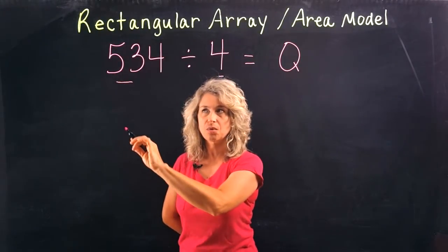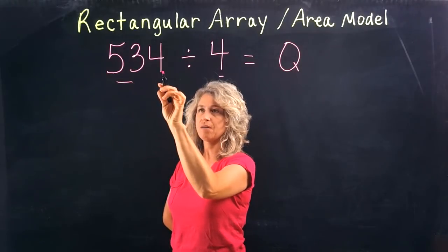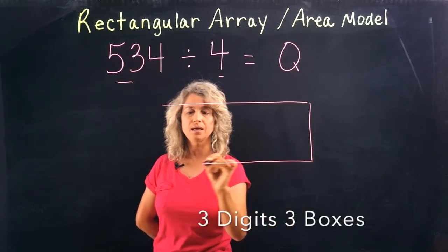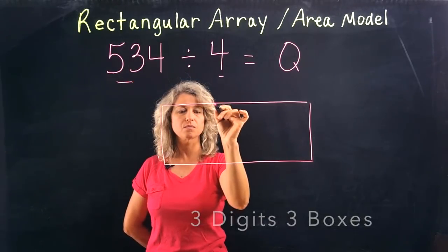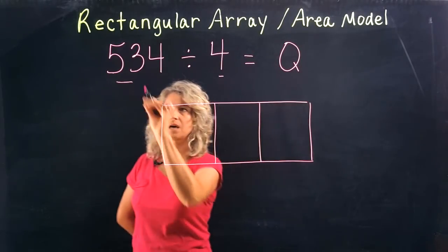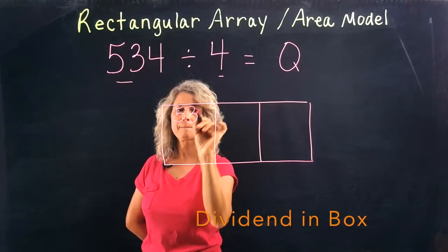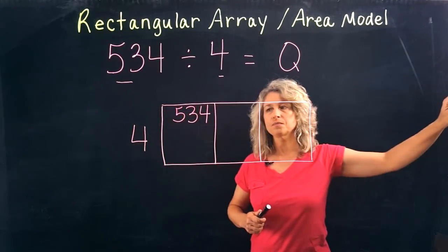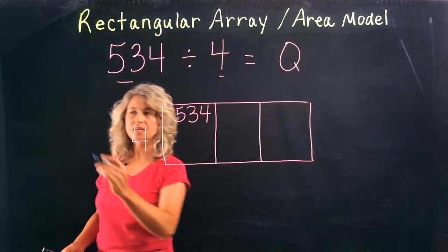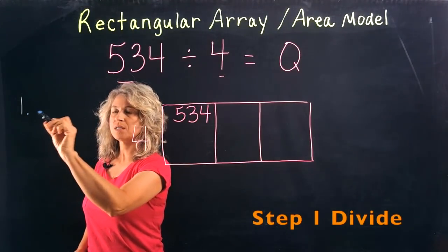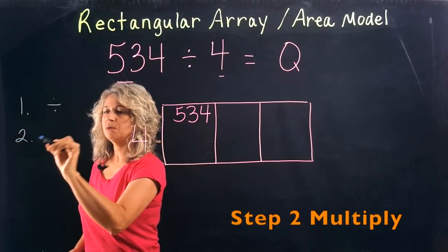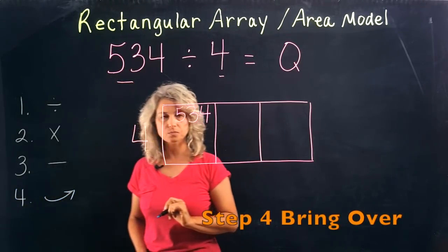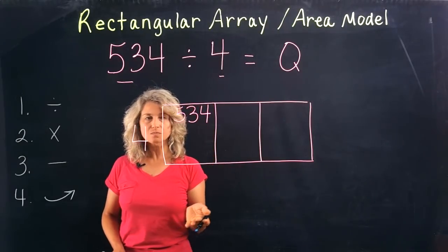When we set up our rectangular array, look and see how many digits you have. Since the 5 is in the hundreds place, you will need to draw a box with three sections for the three digits. Put your dividend in the box and your divisor goes to the side. Just like with long division, we have steps to follow: step one is divide, step two multiply, step three subtract, and step four is bring over.